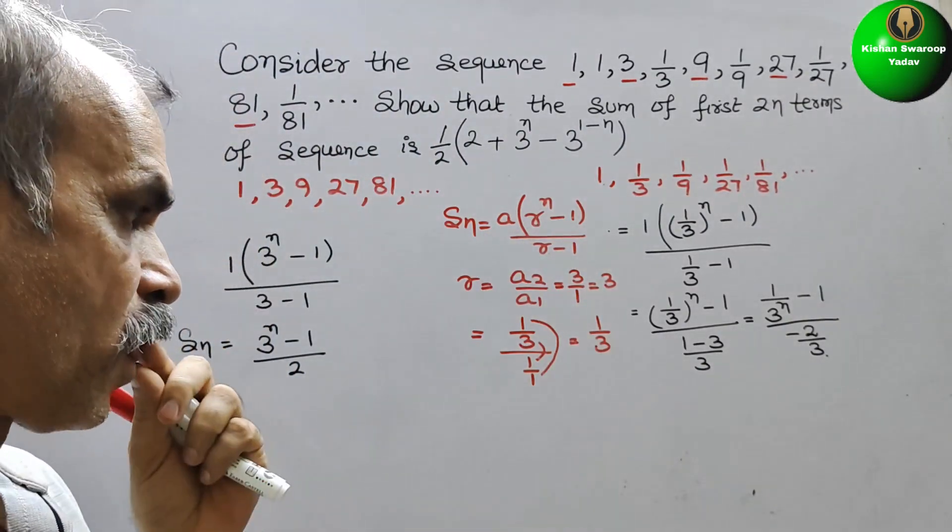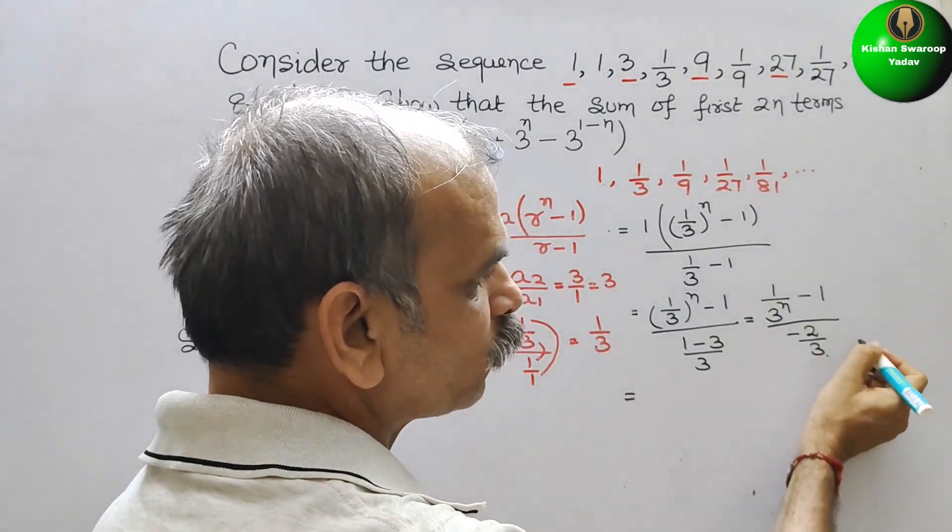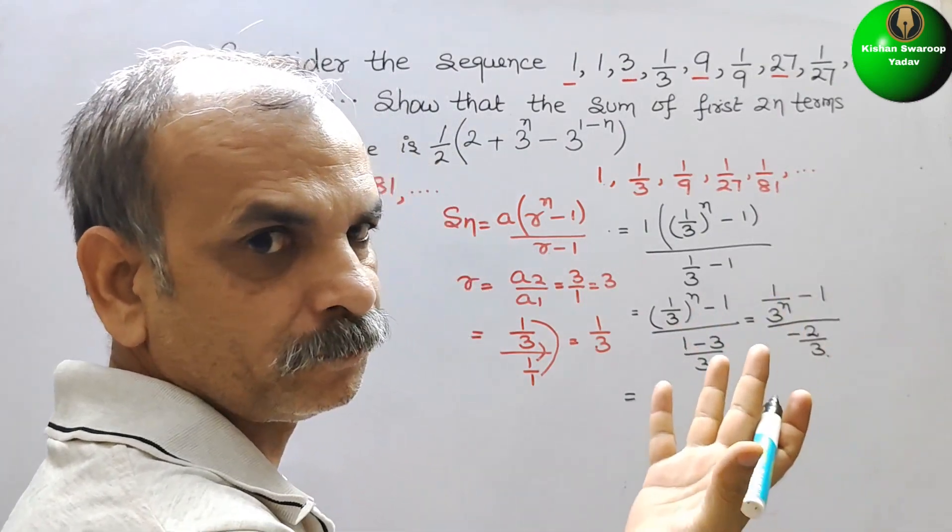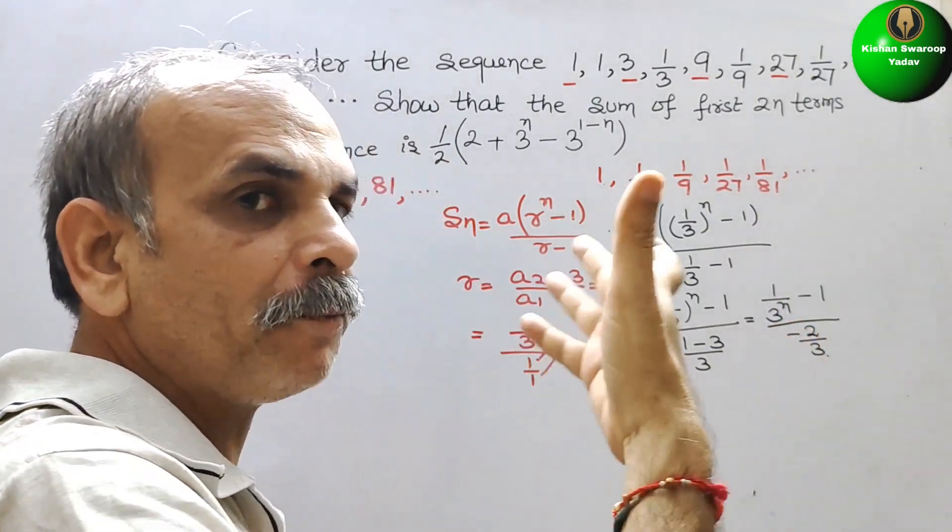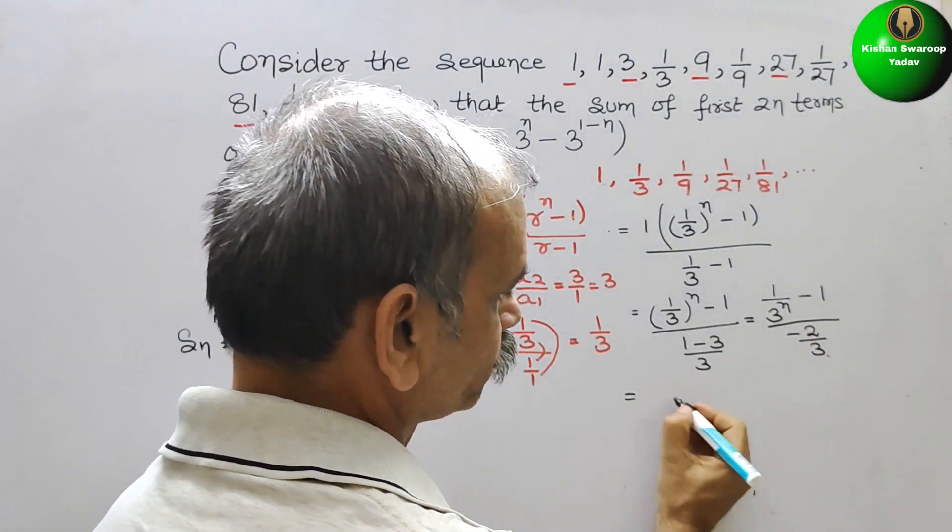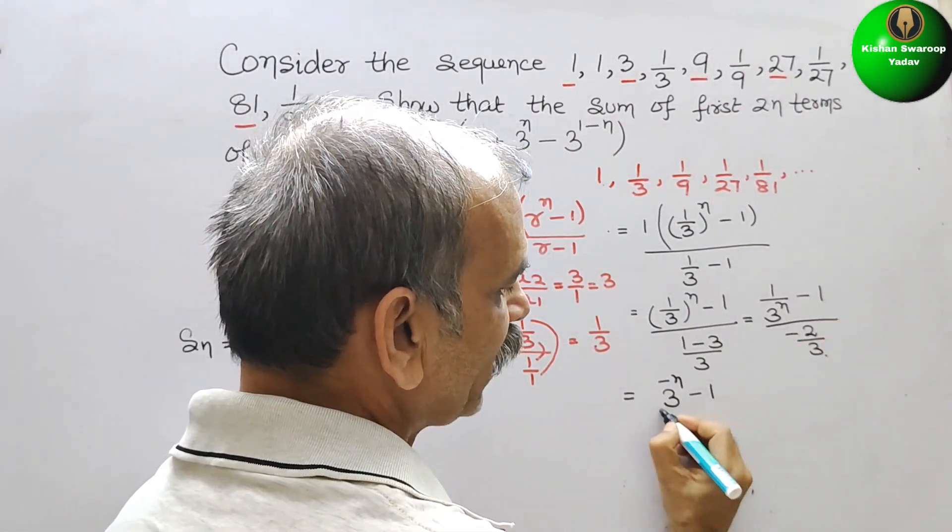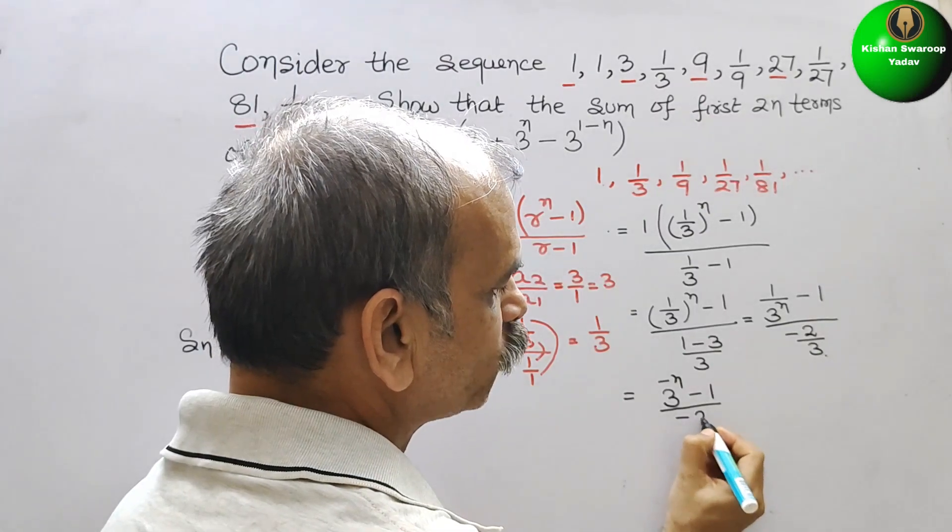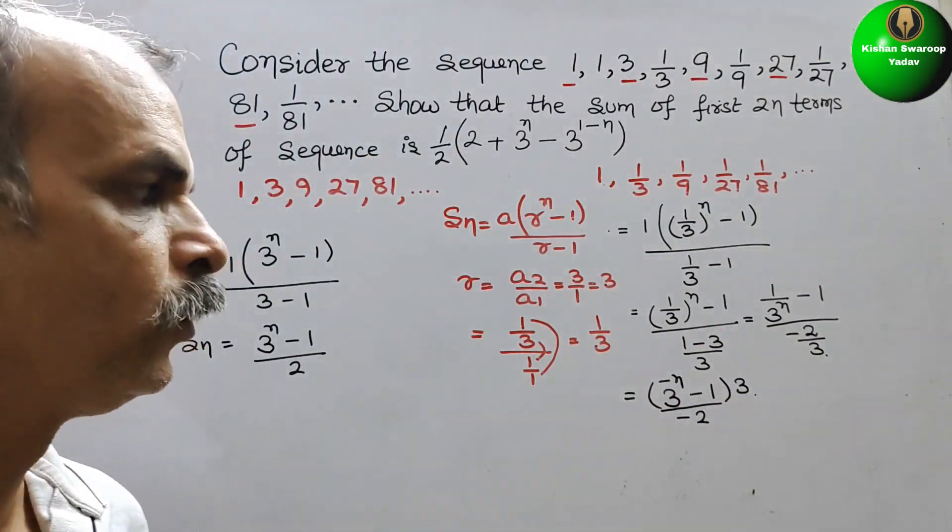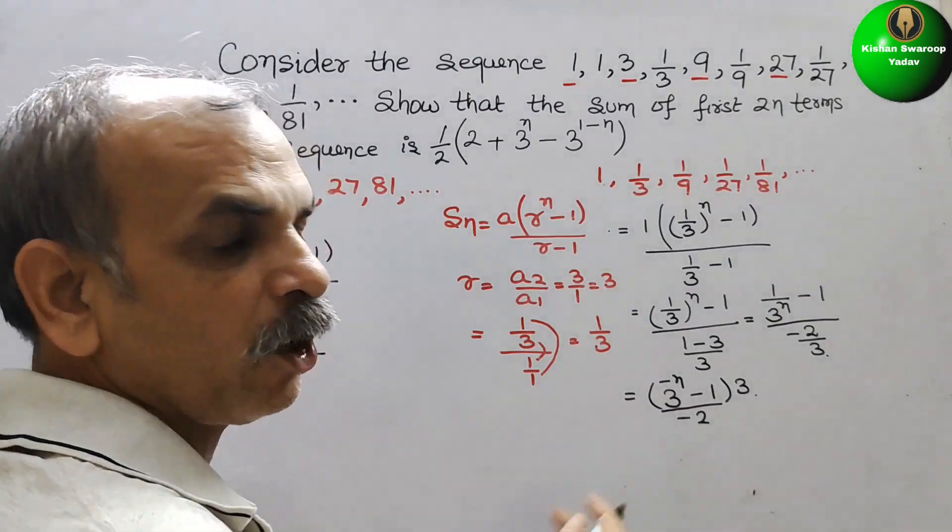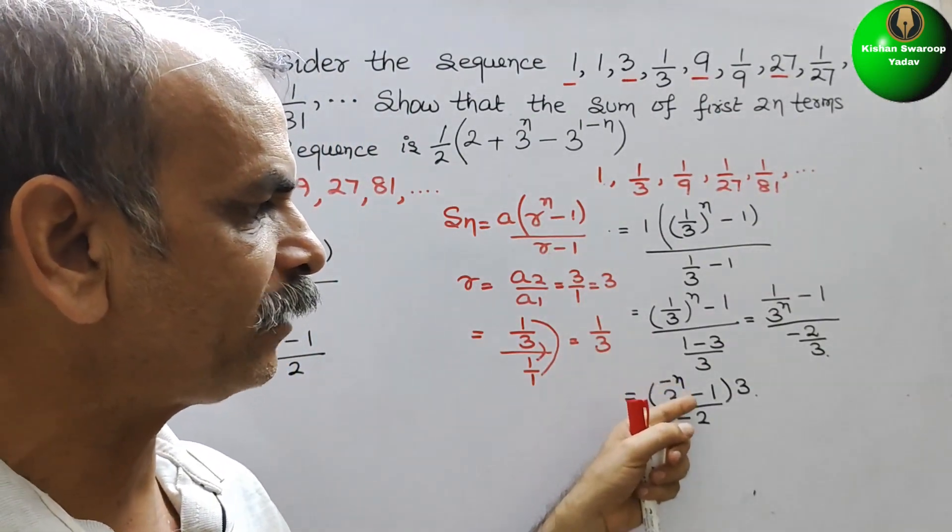So here we will write (1/3)^n - 1. 1 to the power of n or any number will give you 1 only. So we will write (1/3)^n - 1 by, and this will give you -2/3. Now, so how we will solve this? This is nothing but outer to outer multiplication and inner to inner. So this is minus down, so we will bring it up. It will be -3^(-n+1).